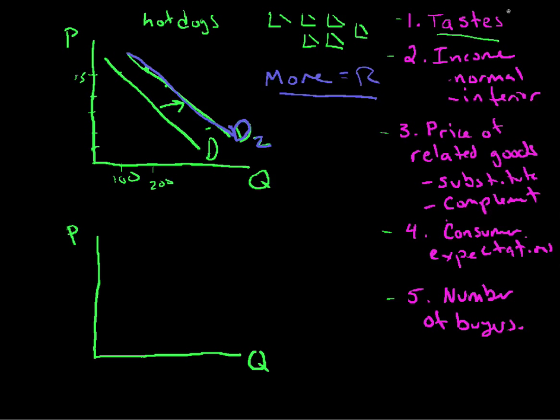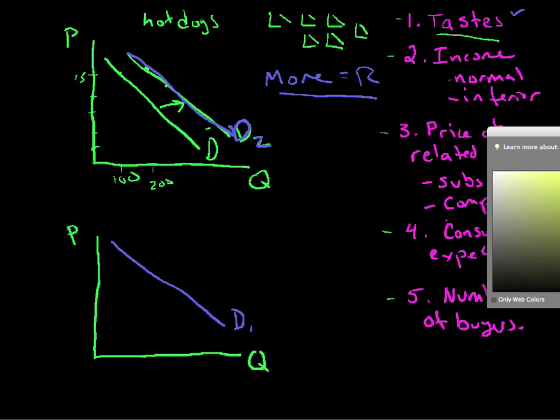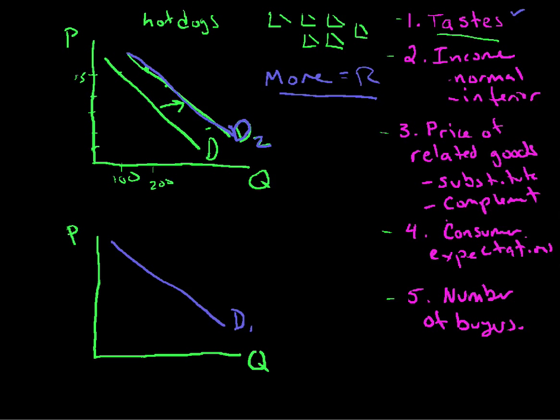So the first thing, if you demand or prefer hot dogs more, you shift it to the right. That's taste. What happens if something else changes? For example, turns out if you eat a lot of hot dogs, it gives you a heart attack. Something like that, something negative, something worse, becomes less popular. What does that mean? That means at every price, $5, we no longer demand the 100 hot dogs, do we? We demand fewer or less hot dogs, so we put a dot there. As a matter of fact, at every price, we're going to demand fewer hot dogs. And what's going to happen to this demand curve? It's going to shift to the left. So less equals left.